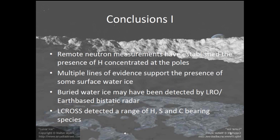Multiple lines of evidence support the presence of some surface ice. Shuai Li in Hawaii using M-Cube data noticed diagnostic features due to surface water ice at the lunar poles. LOLA reflectance measurements show anomalously high reflectance in portions of the permanently shadowed regions, and the LAMP UV experiment — Paul Hayne and others — showed that the on-band/off-band water ice ratio is anomalous and indicative of surface water ice.